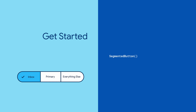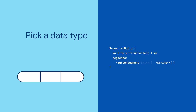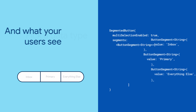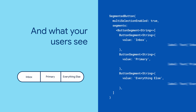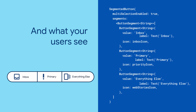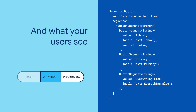Initialize the segmented button, and if you want multi-select, set it using the multi-selection enabled flag. Give it a list of button segments. Each button segment should have a value with a label, or icon, or both. Button segments are selectable by default, but you can disable it by setting the enabled flag to false.